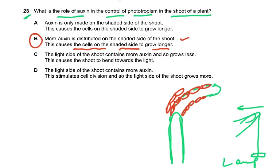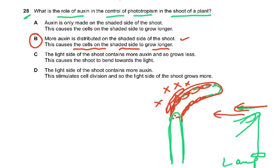The tip releases auxin, and further growth is towards the light. This is because auxin is more concentrated on the shaded side — those cells grow more, which is why the shoot bends. It is not the existing part that bends; rather, further growth occurs in that direction.